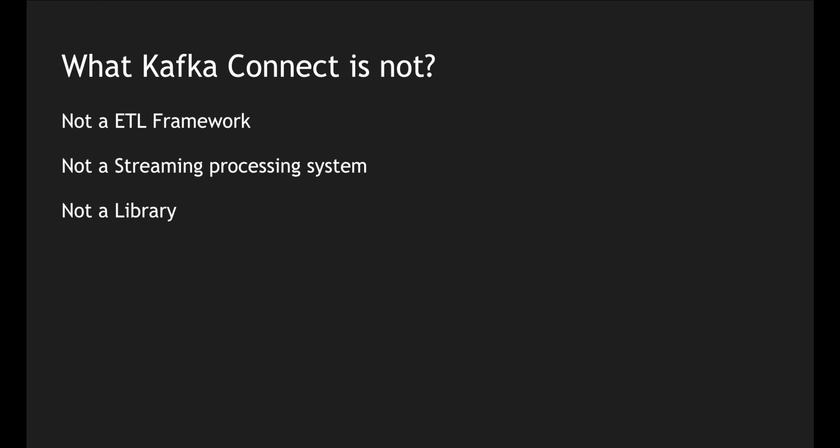Kafka Connect is not a library — it is an individual process. You can configure it using configuration information and have REST calls to the connect cluster to create connectors and control the cluster using REST APIs and configuration files. Kafka Connect is also not a database — don't dump data into Kafka Connect. It connects to a data source and connects out into a Kafka cluster.